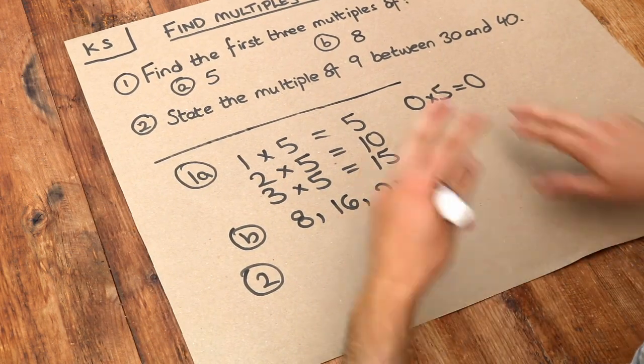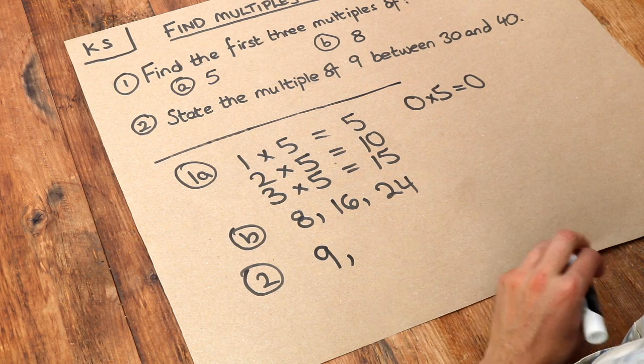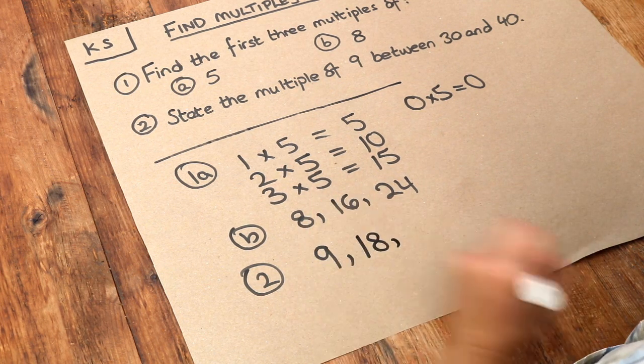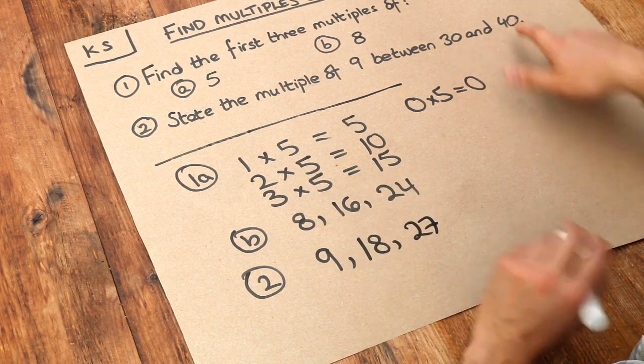What's the first multiple of nine? If we ignore zero, nine is the first multiple of nine, one lot of nine. Two lots of nine is eighteen. Three lots of nine, three times nine is twenty-seven. Is that between thirty and forty yet? No.